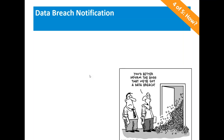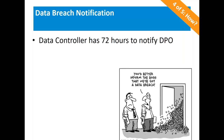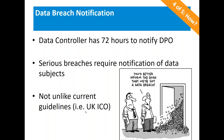A big part of GDPR is the uniformity of data breach notification. The data controller has 72 hours to notify the DPO of a breach. In serious breaches, they are also required to notify the data subjects themselves. This is not entirely unlike existing guidelines such as the UK ICO or PII notification requirements in 48 of the US states — but GDPR codifies it clearly. Notification is an important component.